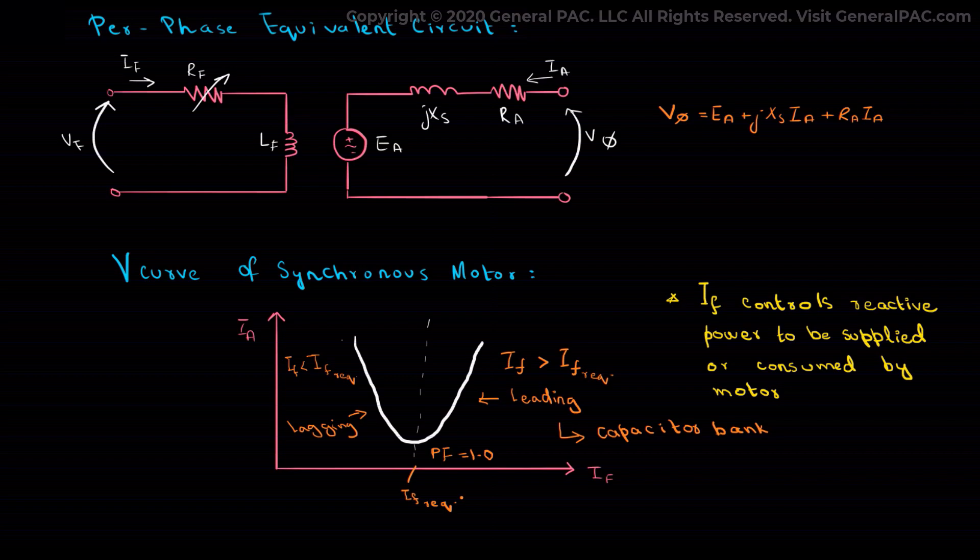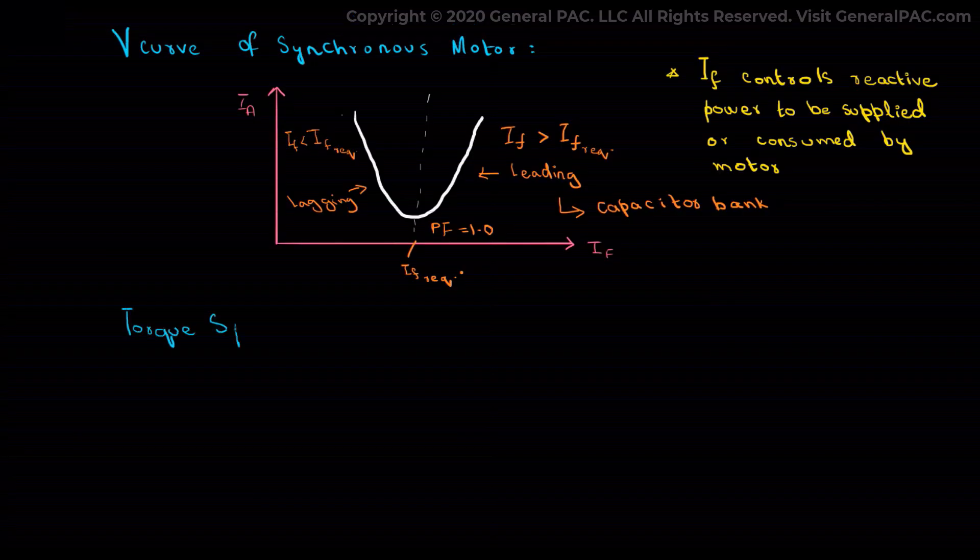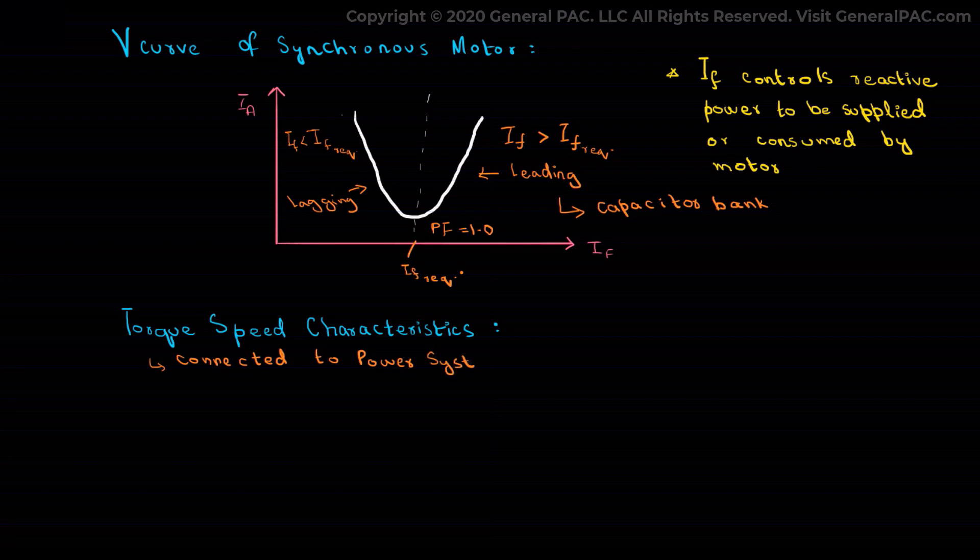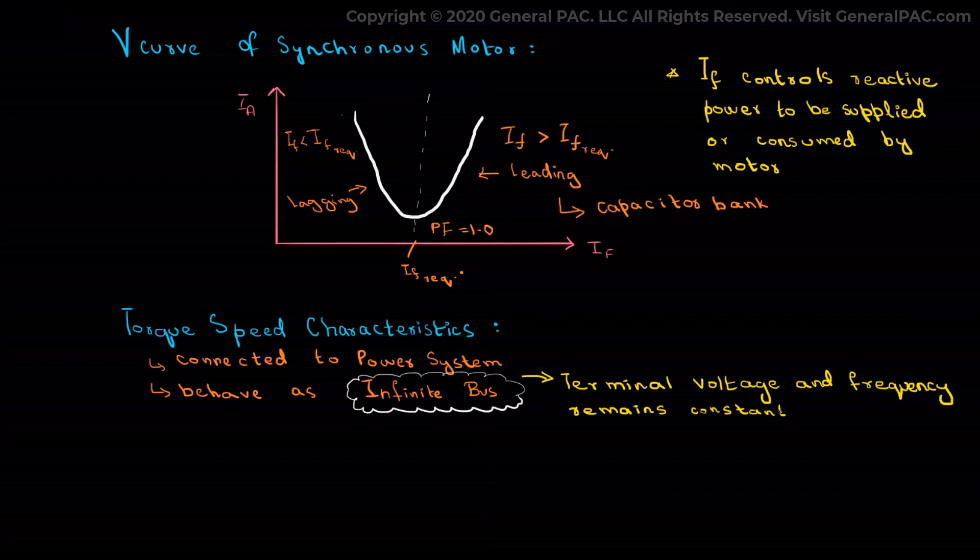Up to now we have discussed the basic operations, the equivalent circuit, and the workings of a synchronous motor. Now we'll introduce you to the torque-speed characteristic of the motor. Because the synchronous motors are connected to power systems which are much larger than motors, these power systems behave as infinite bus whose terminal voltage and frequency remains constant irrespective of power drawn by the motor.